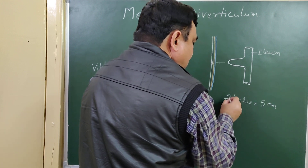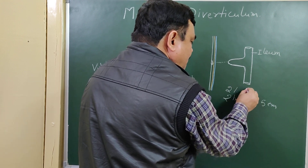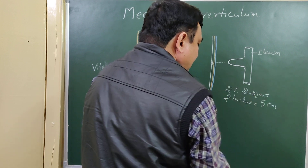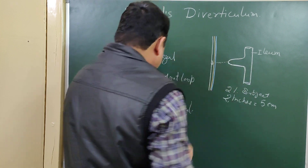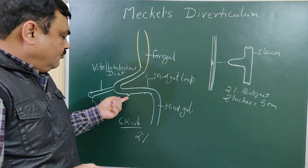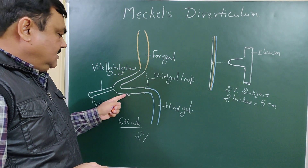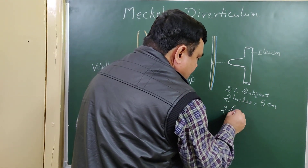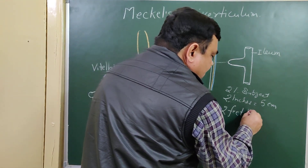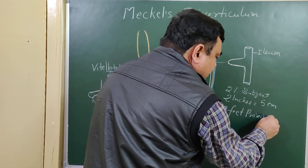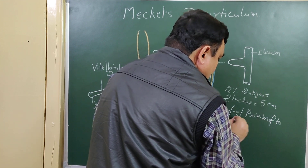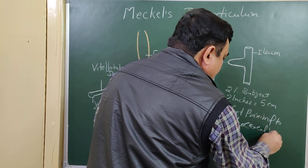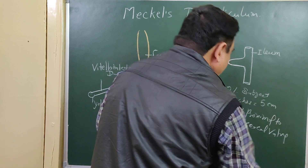It occurs in about 2% of subjects, and it is located about 2 feet proximal to the ileocecal valve.